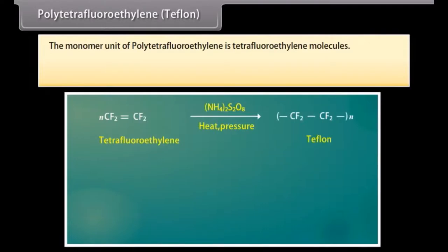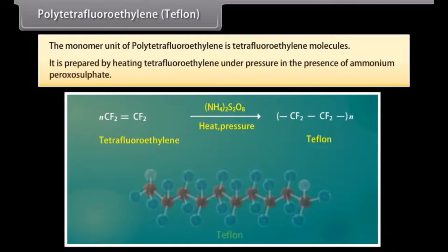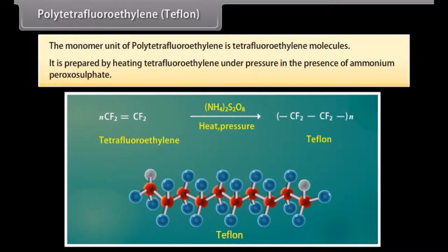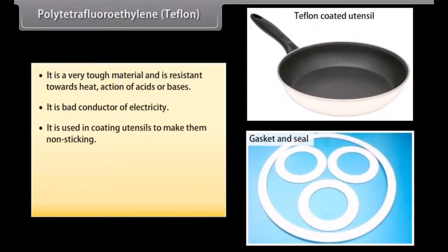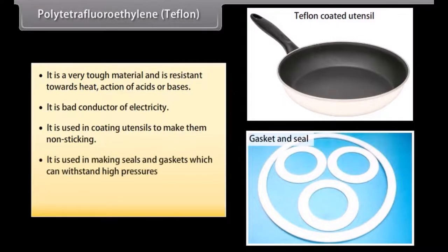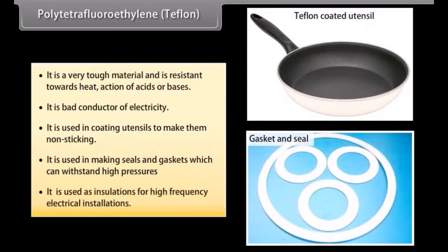Polytetrafluoroethylene (Teflon): the monomer unit is tetrafluoroethylene. It is prepared by heating tetrafluoroethylene under pressure in the presence of ammonium peroxosulphate. It is a very tough material, resistant to heat, action of acids and bases, and is a bad conductor of electricity. It is used for coating utensils to make them non-stick, making seals and gaskets that withstand high pressures, and as insulation for high-frequency electrical installations.